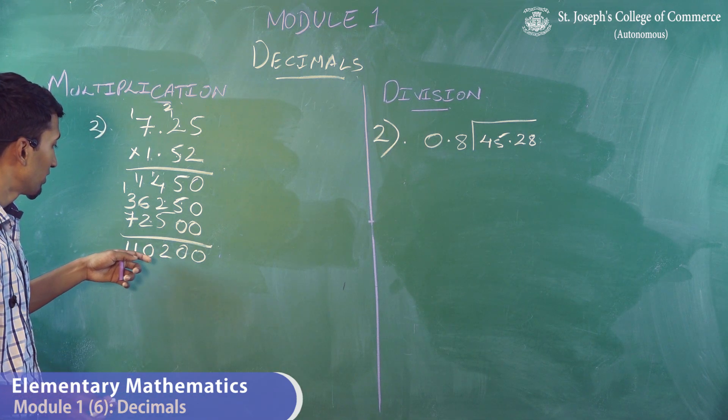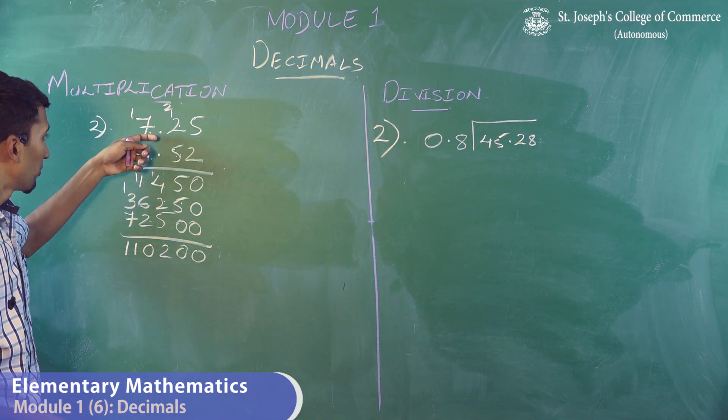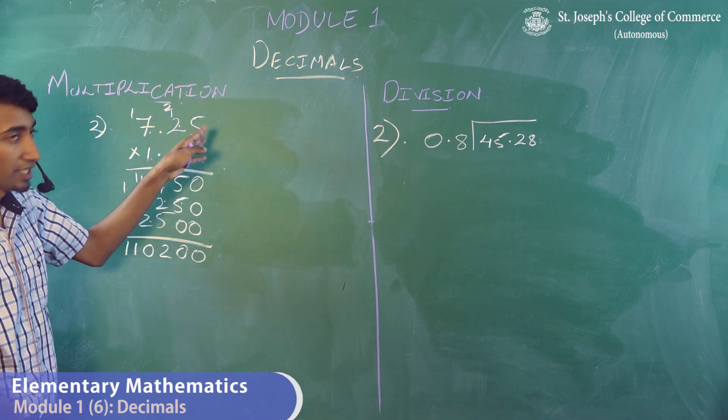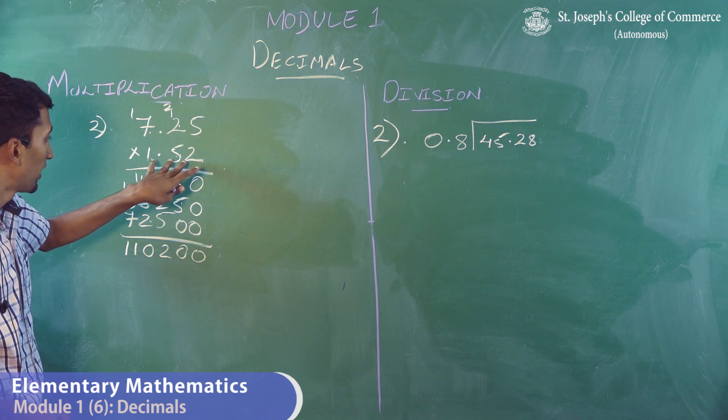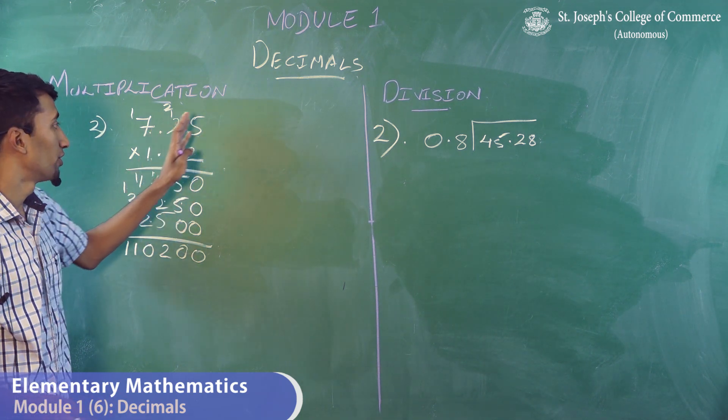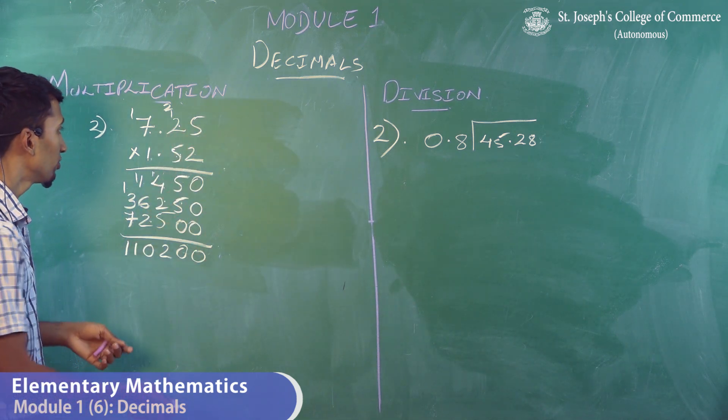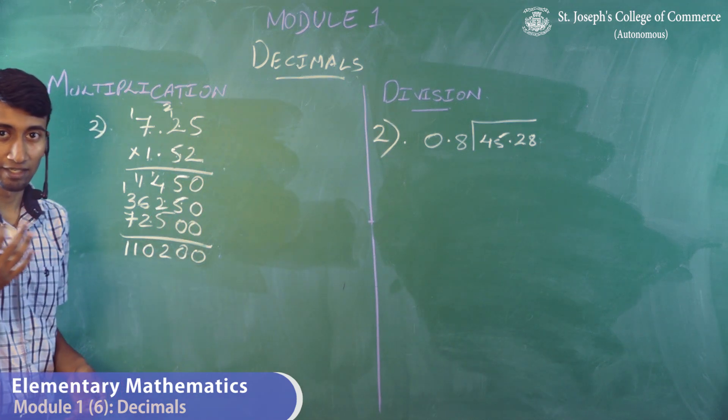Now, you have double 1, 0, 200. Now, over here, what we are going to do is, we are going to go back and look at the decimal points. How many numbers are there after the decimal points? That is 2 numbers in the first and 2 numbers in the second. So, that means 4 numbers totally are on the right hand side of the decimal point. So that means I need 4 numbers on the right hand side of the decimal point.